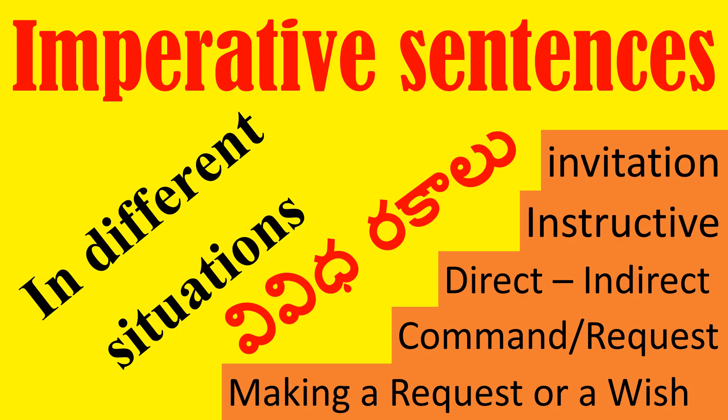Hi friends, welcome to Spoken English Creature Detect. In this video, let us learn about imperative sentences in different situations. The topics covered include invitation, instructive, direct, indirect, command or request, and making a request or a wish.